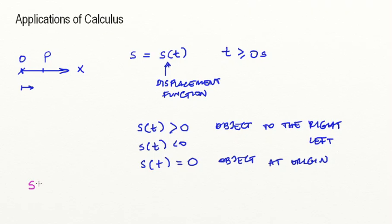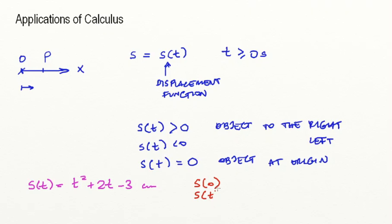So really simply here, let me give you a displacement function. And let's say that this is equal to t squared plus 2t minus 3 centimeters. So at any given time, I can just substitute time in this equation, and I can find the position of my object. You can even try yourselves: what would be position at the beginning? What would be position at time equals 1, time equals 2, time equals 3, and time equals 4? You can just put those numbers back into your equation.